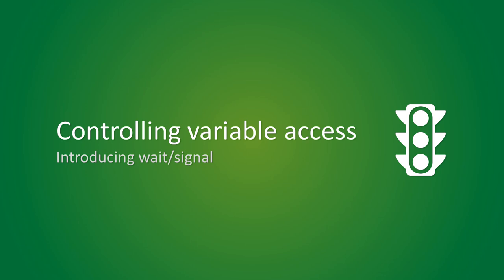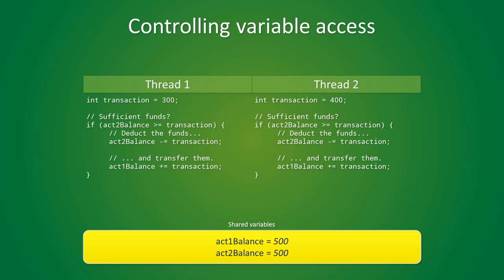Much like traffic lights regulate access to an intersection, we need a mechanism that lets us control access to shared variables. Going back to our previous example, we need to identify so-called critical sections. In our program, we want to make sure that at any given time, at most one thread is using our shared variables. These will be our critical sections. Any thread wishing to get access to the balance information has to request access and wait for their turn.